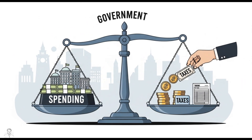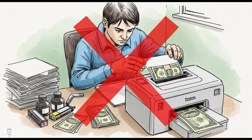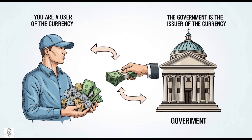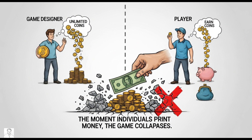So they must spend before we can pay anything back. Taxes don't fund spending — they help balance the system. This is why the government can run deficits for decades without shutting down. You are a user of the currency; the government is the issuer. It's like a game designer versus a player: the game designer can create unlimited coins, the player has to earn coins.